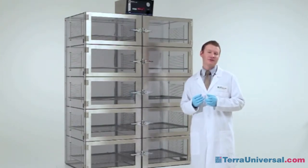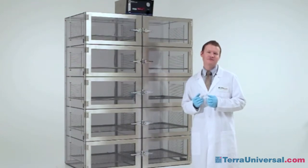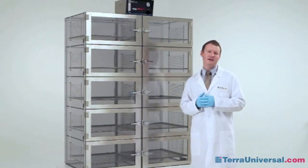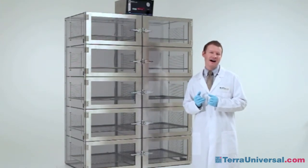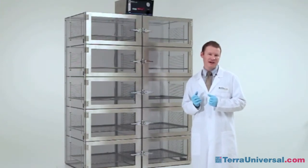Terra Universal can build a chamber out of transparent acrylic. The advantages of acrylic are it's economical, has a high level of rigidity, and it's transparent.